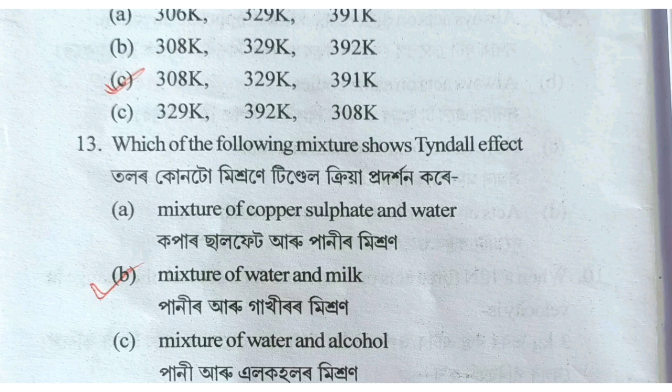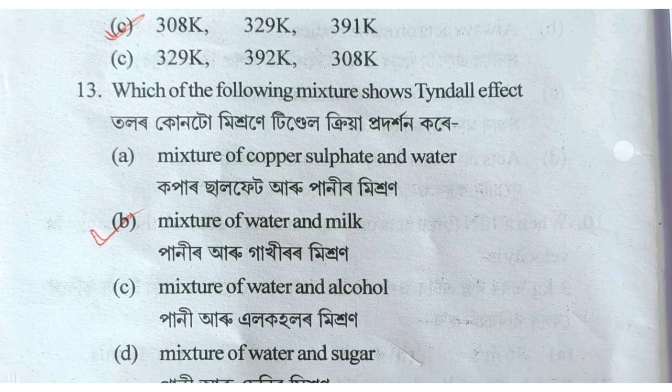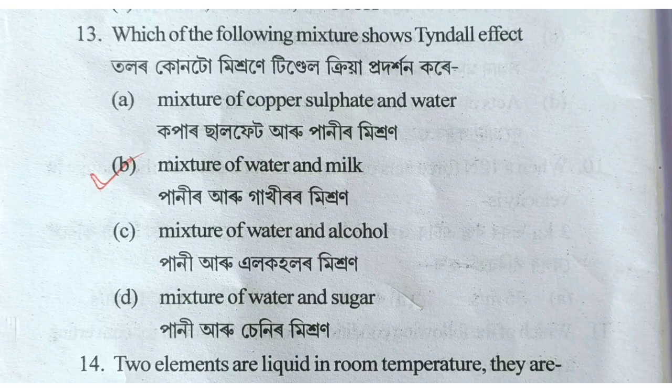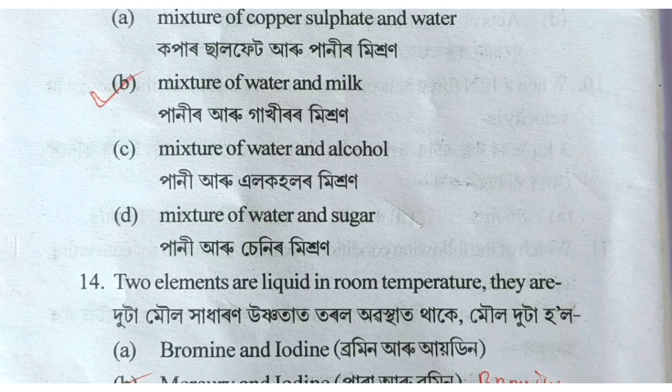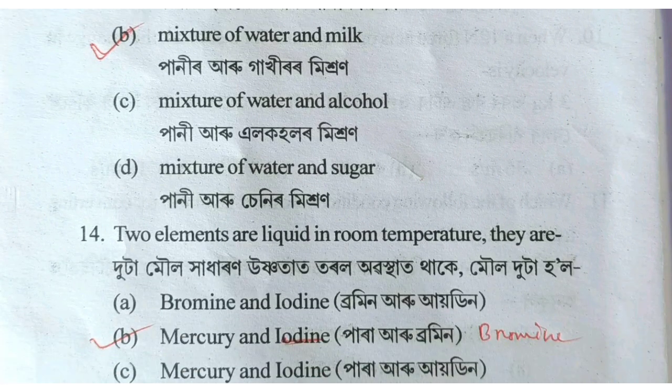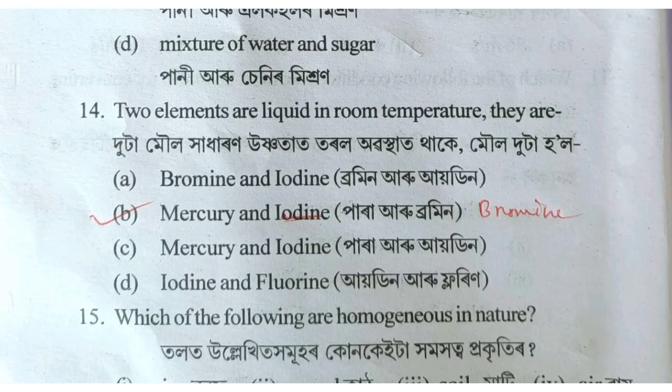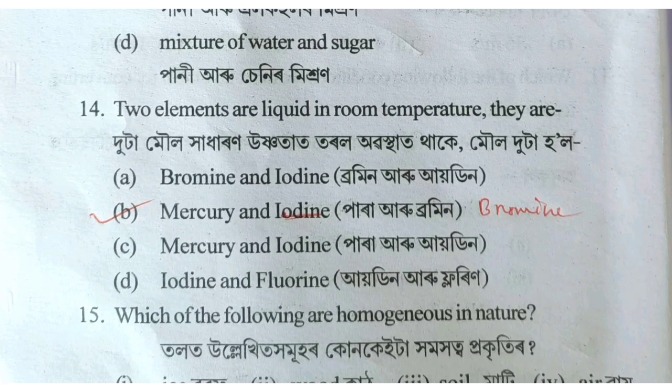Which of the following mixture shows the Tyndall effect? The mixture is made of certain components. The two elements that are liquid at room temperature are bromine and mercury.